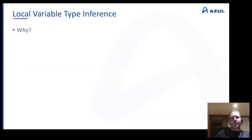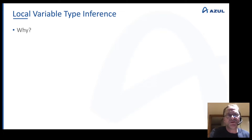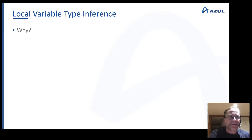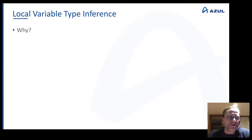The first question we have to ask is: why add local variable type inference to Java? It was introduced in JDK 10, which was something like 23 or 24 years after Java was first released. So you have to think — why did we need to add it at that point? We survived without it for a long time.